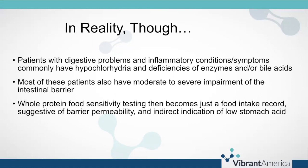Whole protein food sensitivity testing then just becomes a food intake record and is not going to give you specifics as to what in the intestinal barrier is dysfunctional. It won't give you the patterns of zonulin and anti-zonulin, anti-actin, or whether LPS is present. Consider that it's also not really a good tool to detect intestinal permeability because it doesn't give you the patterns of actual intestinal tight junction proteins.